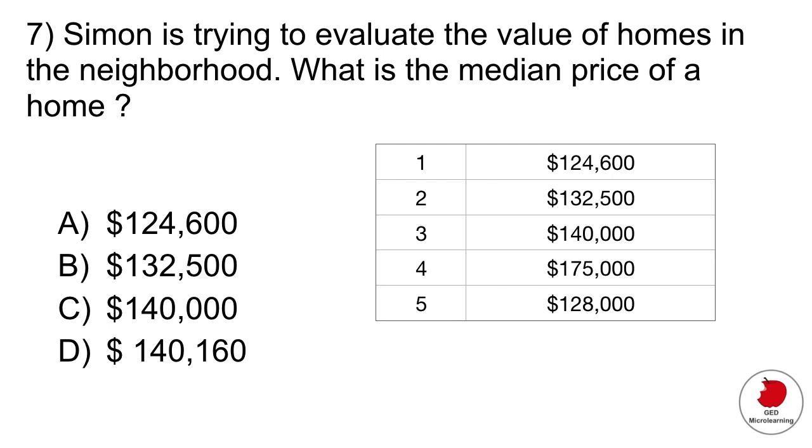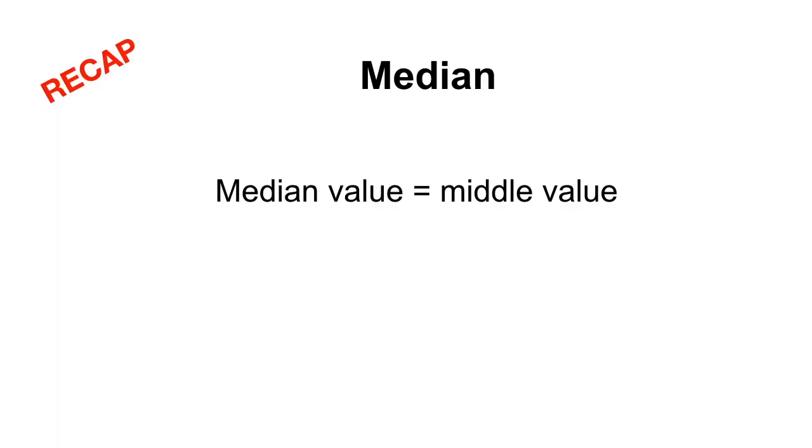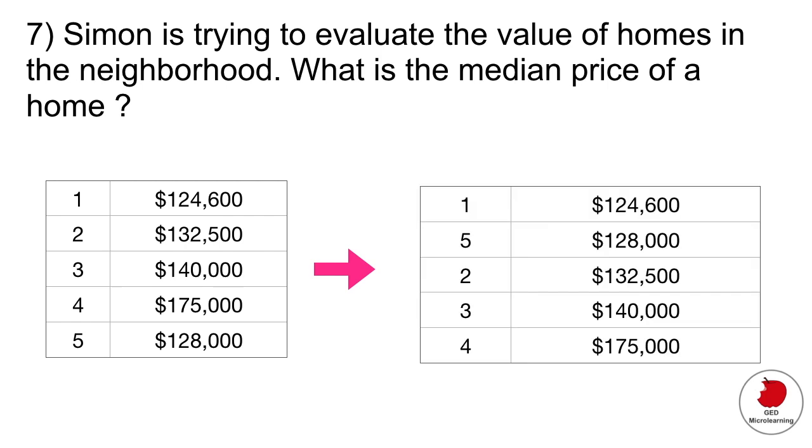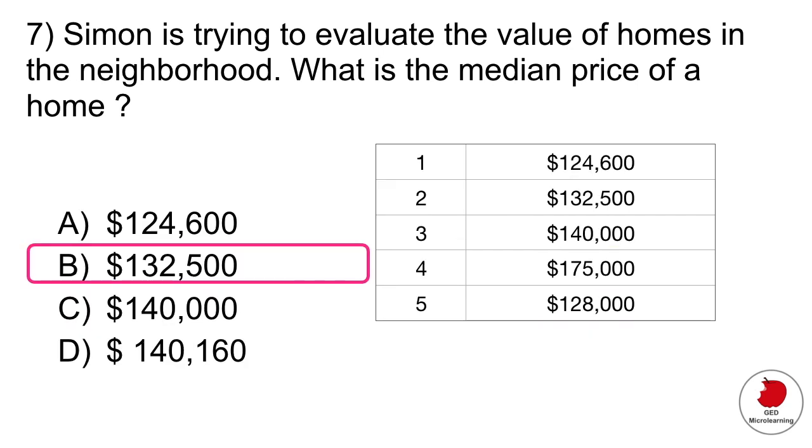All right so in the GED you also have questions relating to things like statistics and probability. So in this case it asks you Simon is trying to evaluate the value of homes in the neighborhood. What is the median price of a home? So there's three really common terms that come up a lot in these statistics portion. So mean, median, and range. Median is actually the middle value, it's not the average that would be mean. Okay so median is the middle value. So all you have to do in these questions you don't actually have to do any calculations. You just have to take all those values that they give you and you have to order them from the lowest value to the highest value and then the median is the middle value. In this case it would be there so your correct answer is b.